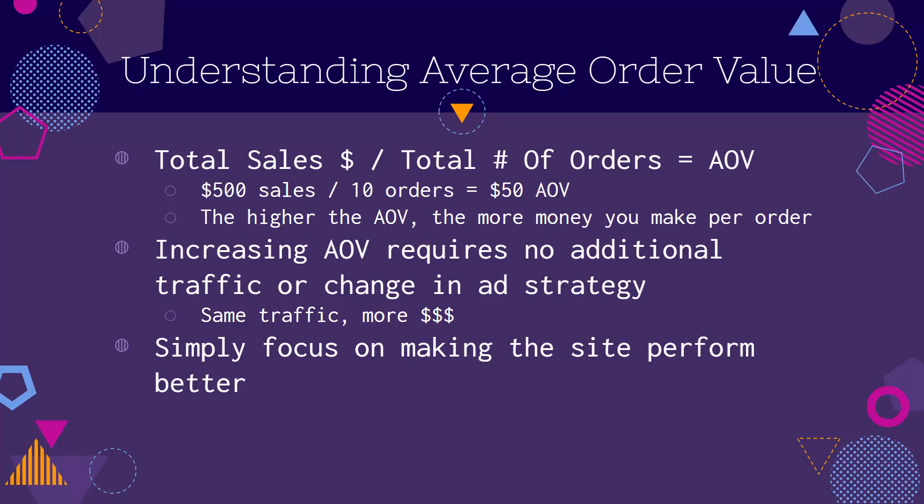The higher the AOV, the better — that means you're making more money per order. Increasing average order value with this strategy requires no additional traffic, no additional ad spend, no extra money. We're talking about using the same exact amount of traffic that we have, just making more money off of that traffic.